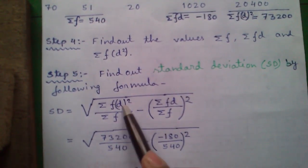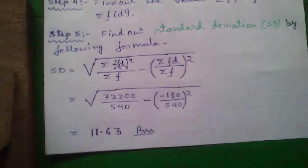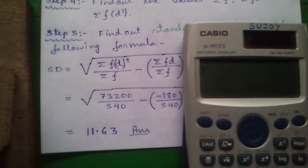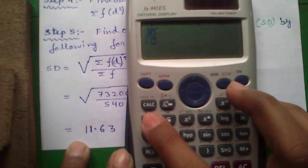Which is sum of FD squared is 73,200. So, 72,200 divided by 540 minus sum of FD is minus 180 divided by sum of F, 540 whole square. So, that is using our Casio FX9 on ES calculator. Press the root button. Press the fraction button.